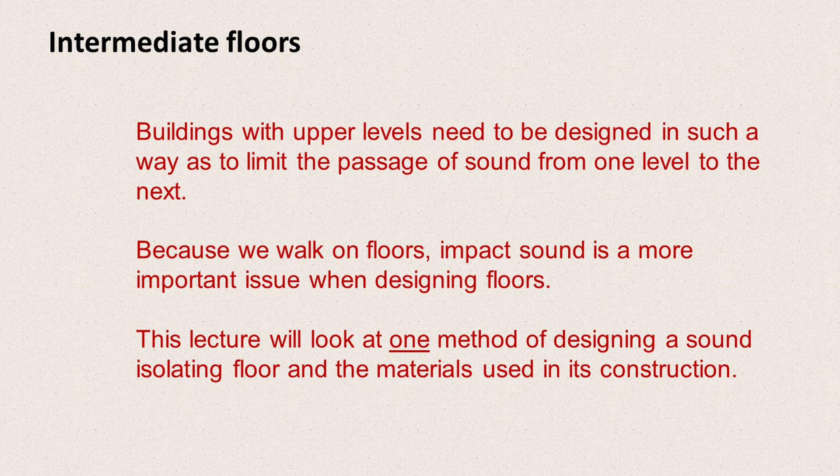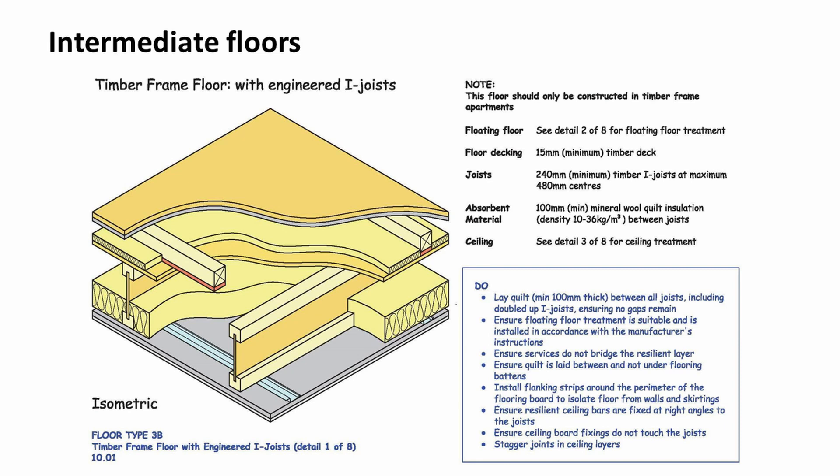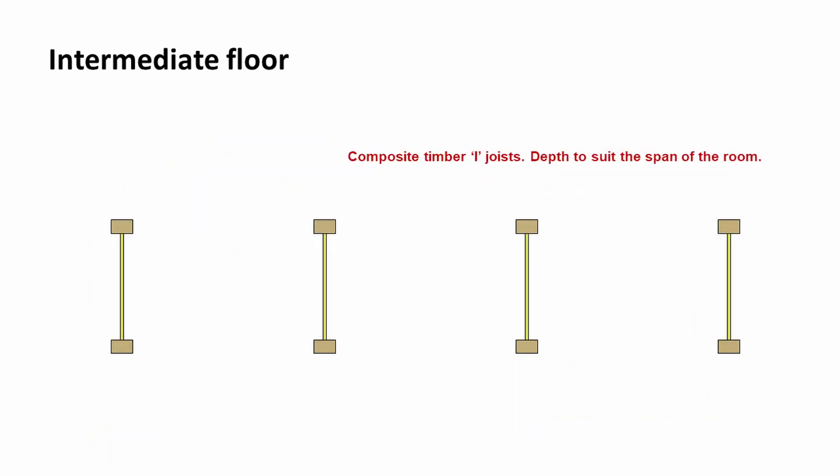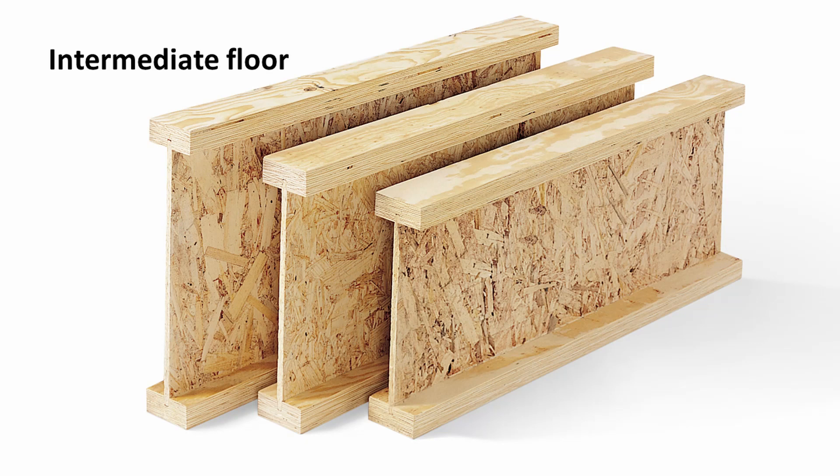This might be the type of floor you would use when designing between flats. It's taken from the example constructions document produced by the Scottish Government, and it looks at a timber frame floor with engineered I-joists. The first stage is to lay out our engineered I-joists, sometimes called composite I-joists, with a depth to suit the span of the room — a wider room would have a deeper I-joist, a narrower room a less deep one. It's timber or plywood at the top with a web of OSB.